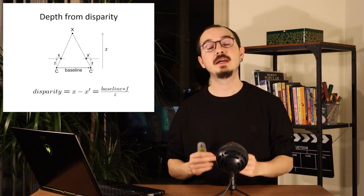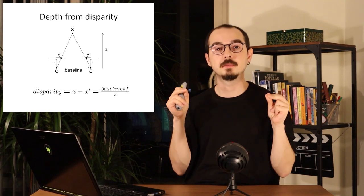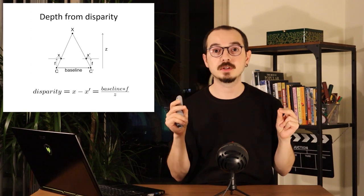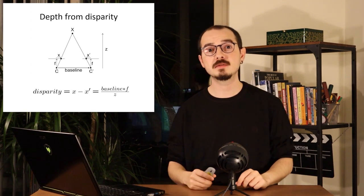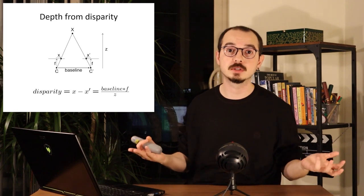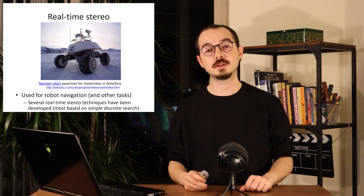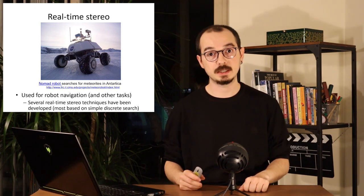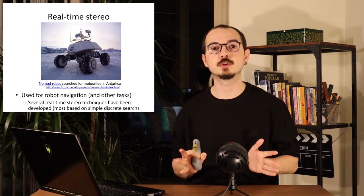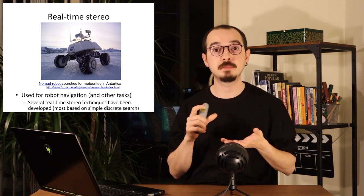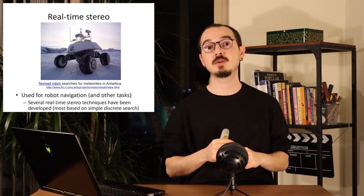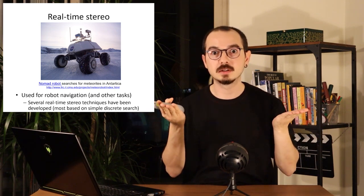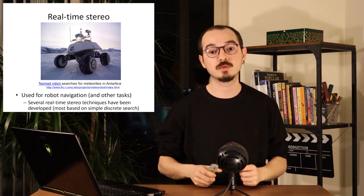Now that we have disparity, if we know the metric distance between the two camera centers — called the baseline distance — we can compute the true depth from disparity using a simple formula that also depends on focal length. These stereo matching algorithms are very popularly and effectively used for robot navigation. There are many efficient algorithms that can do stereo matching on FPGAs deployable even on drones, which is typically how drones reason about their 3D surroundings to avoid hitting walls.